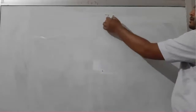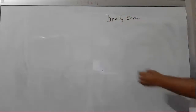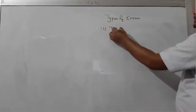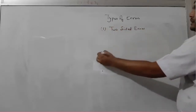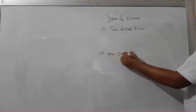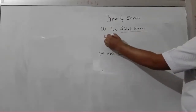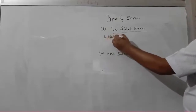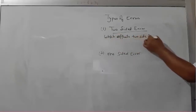The two-sided error is the easiest, and the second is the one-sided error. If we want to discuss the one-sided error in detail, first let us understand the two-sided error briefly. The two-sided errors are those errors which affect two sides of the books of account — which affects two sides of books of account.